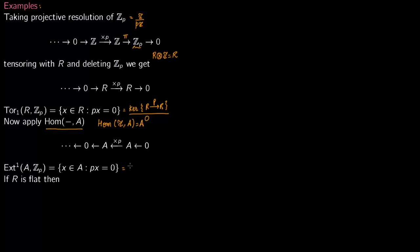Again this is nothing but kernel of the map you're going from A to A times P, divided by image is just 0. So that is what the description is: x is element of A such that Px is 0.